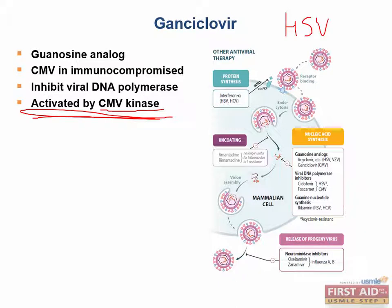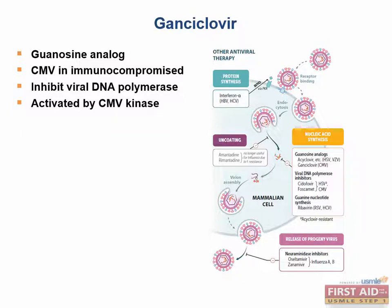Remember, acyclovir and valacyclovir are active against herpes simplex virus because the kinase that activates those drugs is found in HSV only. Ganciclovir, on the other hand, is not active against HSV because the kinase that activates it is found in CMV only.